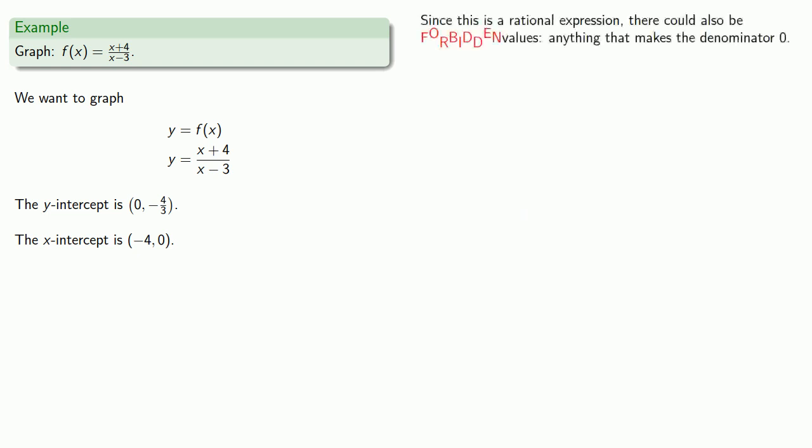Now, since this is a rational expression, there could also be forbidden values, anything that makes the denominator 0. So let's run and find out what makes the denominator 0. We conclude the value x equals 3 is forbidden. Except for the forbidden values, we can use any other value for x, so the domain is all real numbers except for x equals 3.